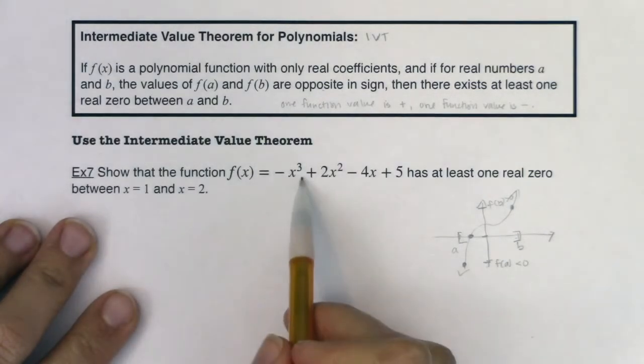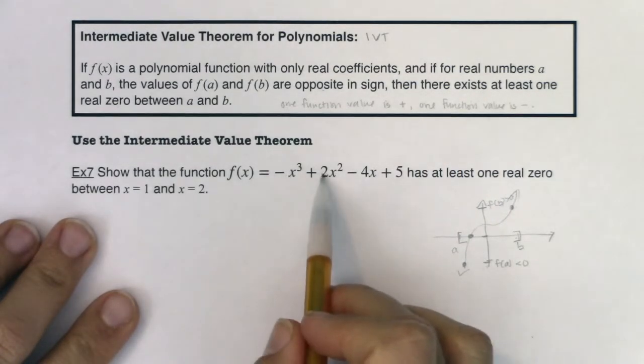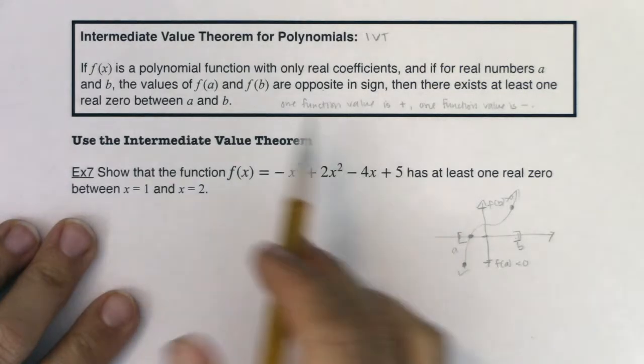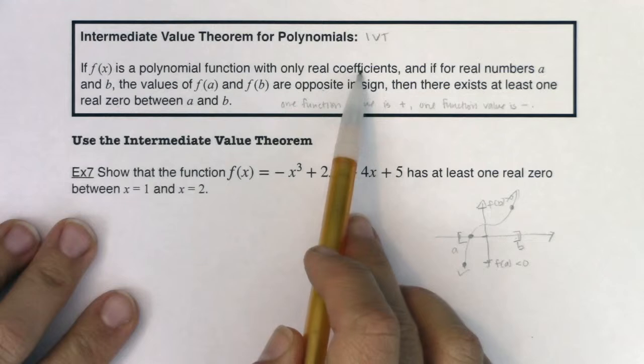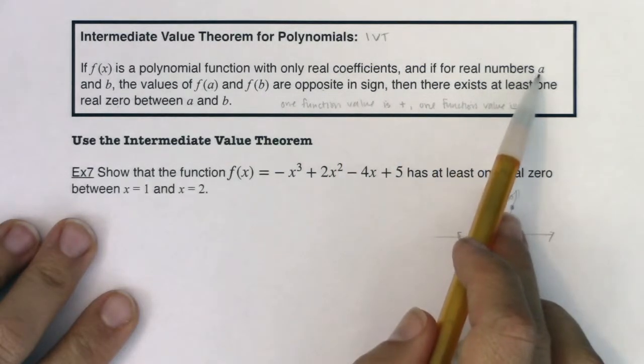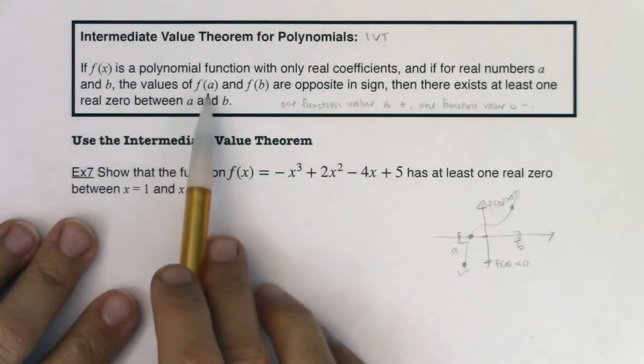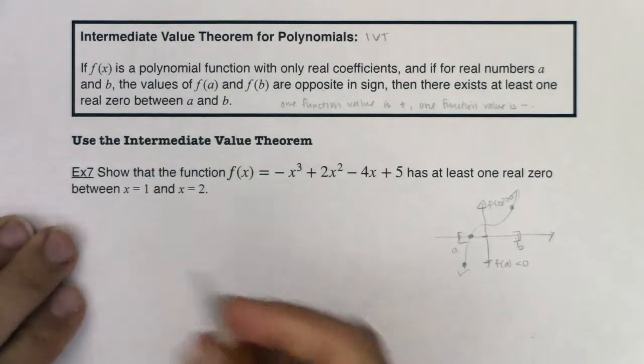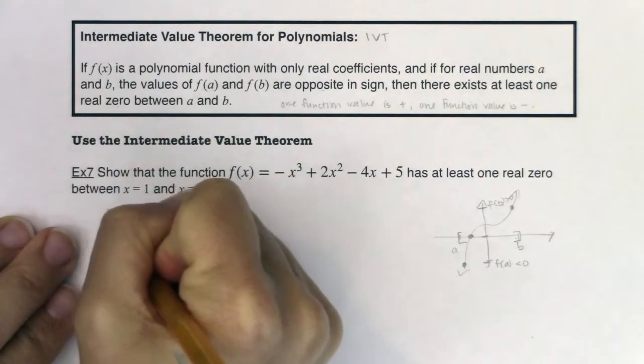So first of all, I've got a polynomial. All of my coefficients are real numbers, because this coefficient is -1, positive 2, -4, positive 5. So I have a polynomial function with only real coefficients. And then I was given two real numbers, a and b. I was given 1 and 2. And since I was given 1 and 2, let's figure out what f(1) and f(2) are equal to. So let me find f(1). And let's find f(2).